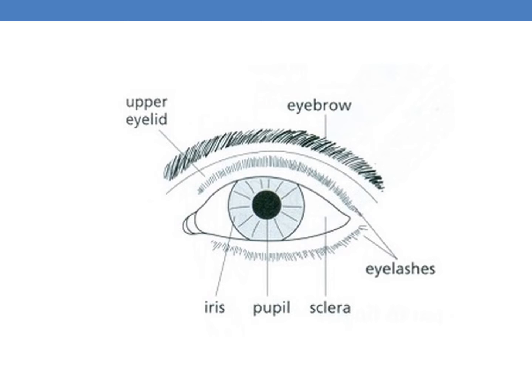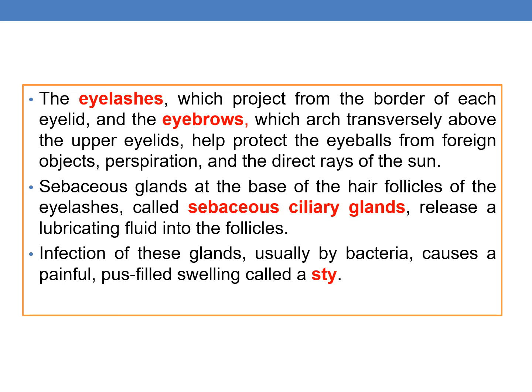Coming to the next accessory structures — eyelashes and eyebrows. The eyelashes project from the border of each eyelid, and the eyebrows arch transversely above the eyelids; both help protect the eyeballs from foreign objects, perspiration, and direct rays of the sun. The sebaceous ciliary glands at the base of the hair follicles of the eyelashes release a lubricating fluid, and infection of these glands — usually by bacteria — causes a painful pus-filled swelling called a stye.